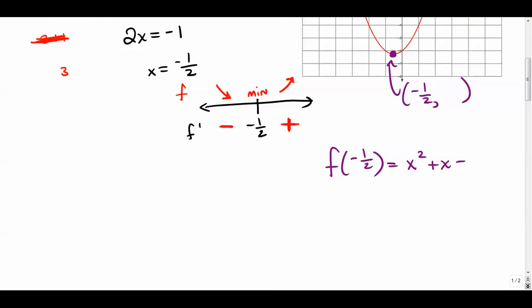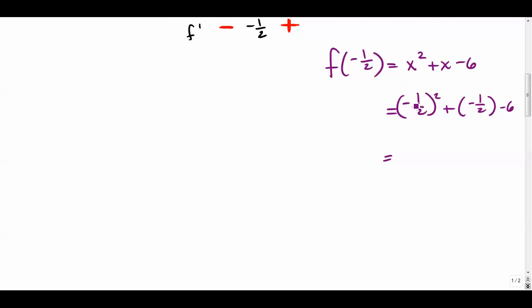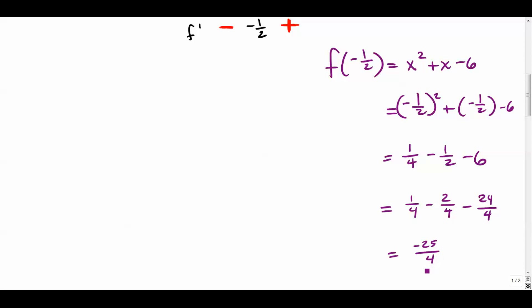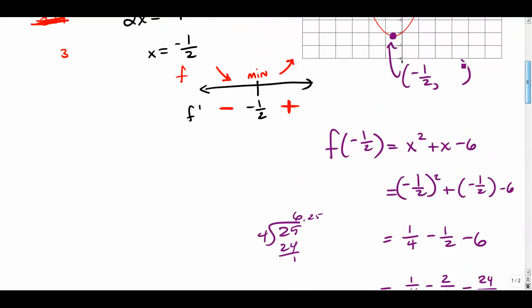Plugging in negative one-half: negative one-half squared is one-fourth, minus one-half, minus six. Getting a common denominator of fourths: one-fourth minus two-fourths minus twenty-four fourths equals negative twenty-five fourths, which is negative six point two five. So when x is negative one-half, y is negative six point two five.